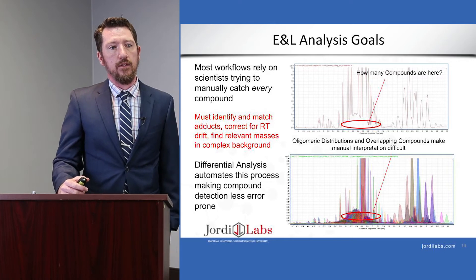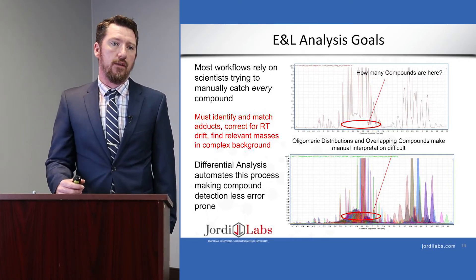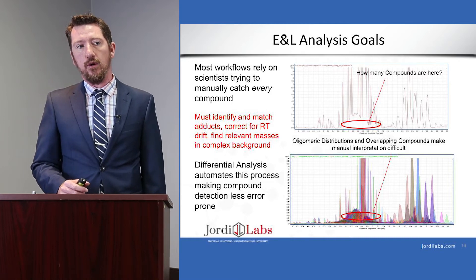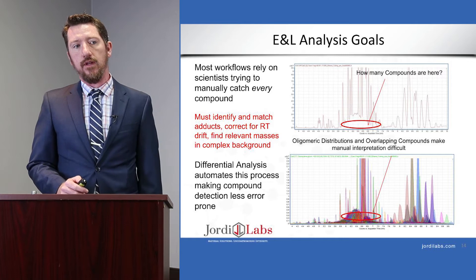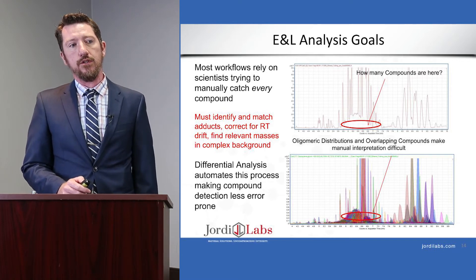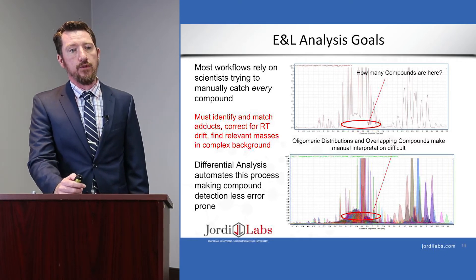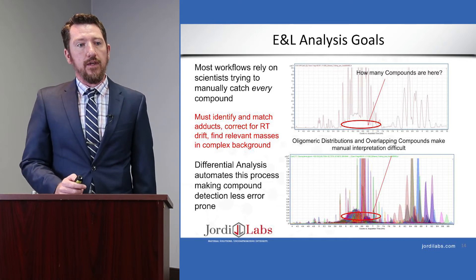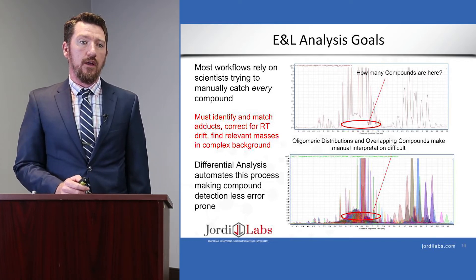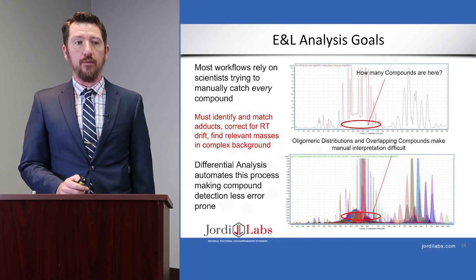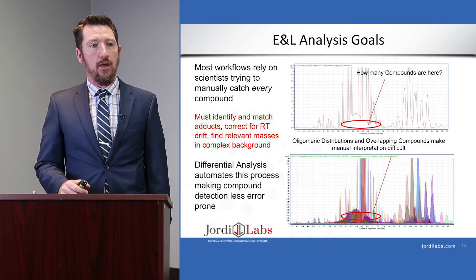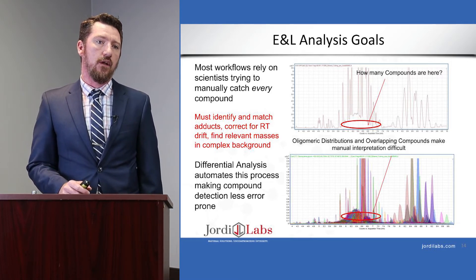If we take a look at our relatively complicated chromatogram and ask how many compounds are in a highlighted region, we see a large number of relatively intense sharp peaks above the baseline and some baseline disturbance as well. Most analytical workflows require a scientist to manually examine all of the mass spectra in that region and decide which ions represent individual components — easy for sharp peaks but very difficult in regions with baseline disturbance. Differential analysis automates this process and makes component detection in complex matrices much less error prone. It reveals a large number of components present under that baseline disturbance.